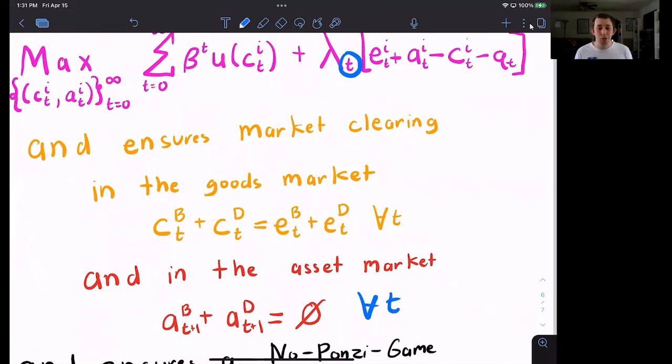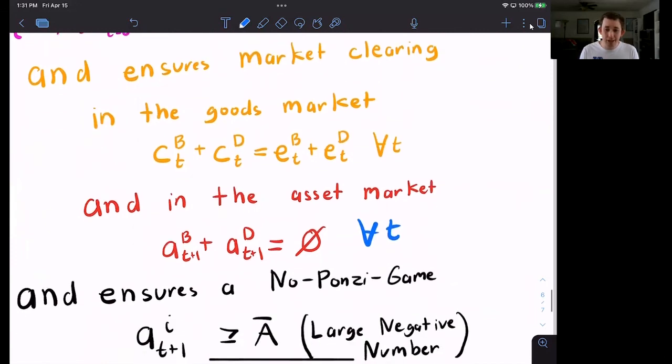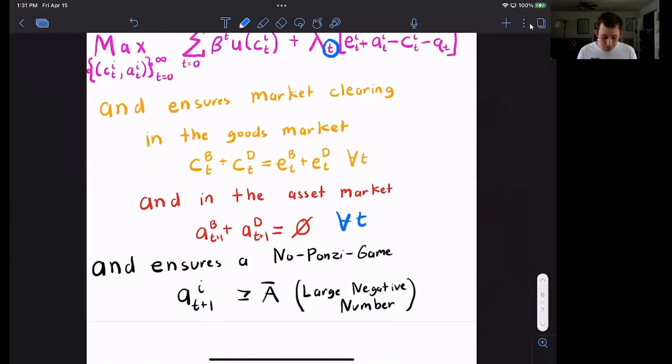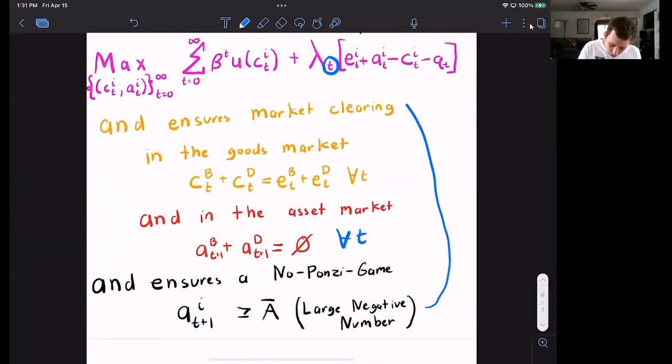Now, I also mentioned that we're not allowed to infinitely borrow, we can't get into infinite amount of debt. That's called a no Ponzi game condition. And that just says that my number of assets tomorrow has to be greater than some large negative number a upper bar. And again, all we're trying to do is prevent the consumer from borrowing and borrowing and borrowing into a place that you will never recover from.